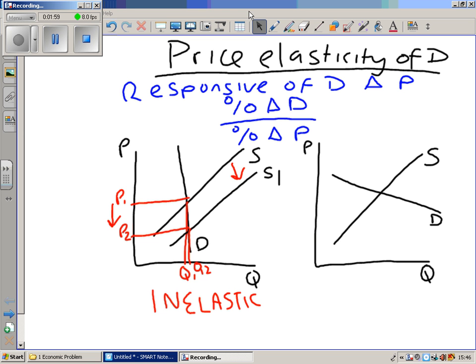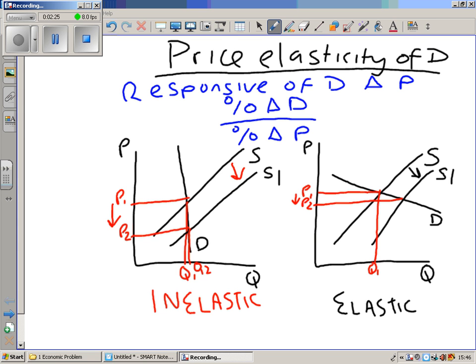Let's consider the other option then. So on the right hand diagram we have got an elastic demand curve. Let's see what happens now then as supply changes. So again supply grows to S1. So originally equilibrium is at P1, Q1. This time however we can see that we only get a small reduction in price but a huge growth in demand. So that is an elastic demand curve.